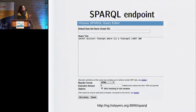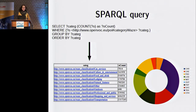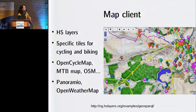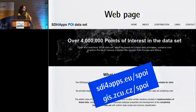This is an example of the SPARQL endpoint — how we provide access to our data. You can make your own query and choose data based on attributes you need or based on location. We also provide a map client to access our data, which is based on HS layers. In central Europe we have specific tiles for cycling and biking. It is also connected with other information such as Panoramio and Open Weather Map.